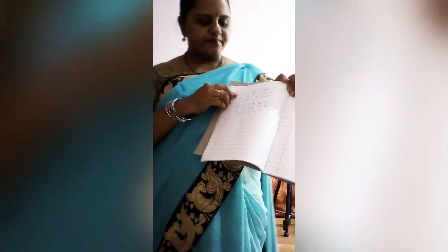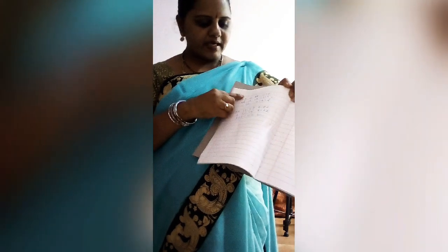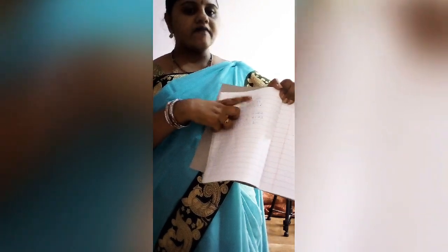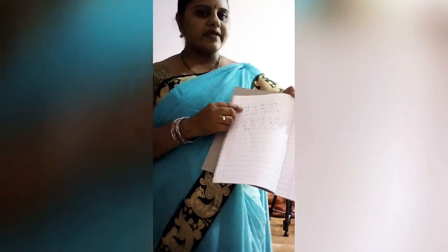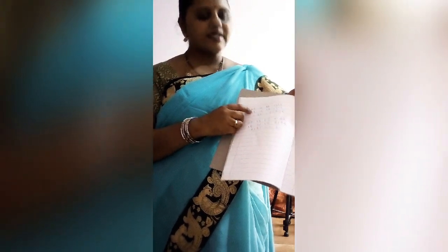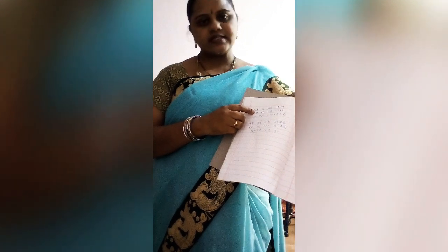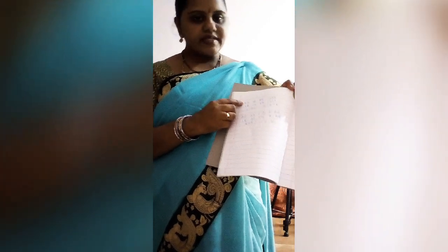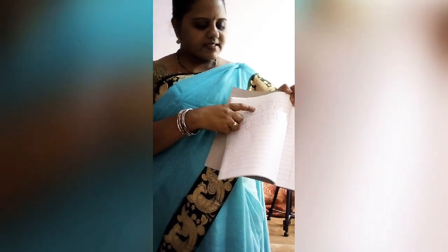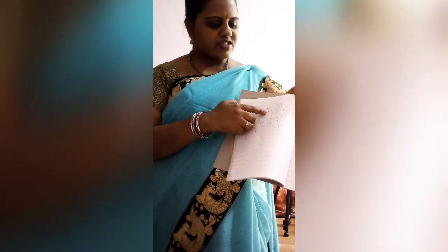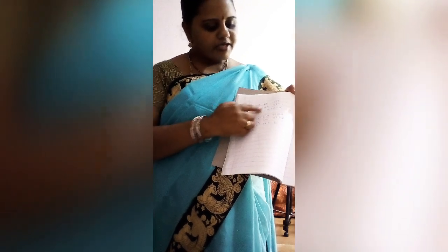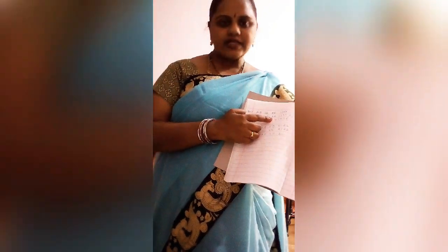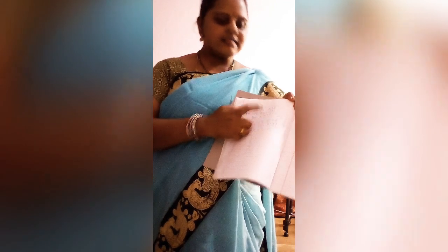I am taking one example here. The vehicle number is AP16BR1399. Using the Kabbalah system: A=1, P=8, then 1 and 6, B=2, R=2, then 1, 3, 9, 9. I will mention this Kabbalah system sequence in the description so you can easily calculate your lucky vehicle number. If we add the total — 1+8+1+6+2+2+1+3+9+9 — it comes to 42. Since it is a double digit, we split it: 4+2 = 6. So 6 is the lucky number.